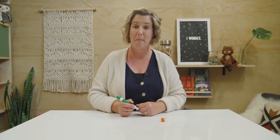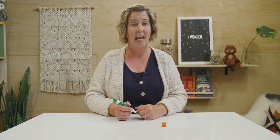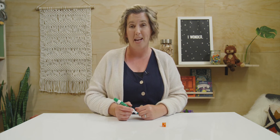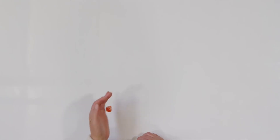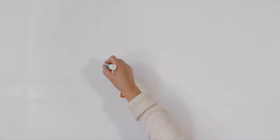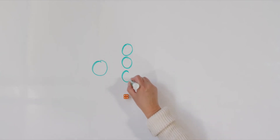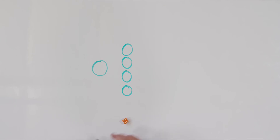For our next game, I want you to draw along with me. You can use a pencil and paper, or a dry erase marker and whiteboard like I have. When I roll the dice, we are going to count the dots and draw that same number. Ready? How many dots is that? One. Let's draw one circle. Good job. Let's try it again. How many dots is that? One, two, three, four. Let's draw four circles. One, two, three, four. Your circles can look like mine or you can make yours look differently. It's okay.